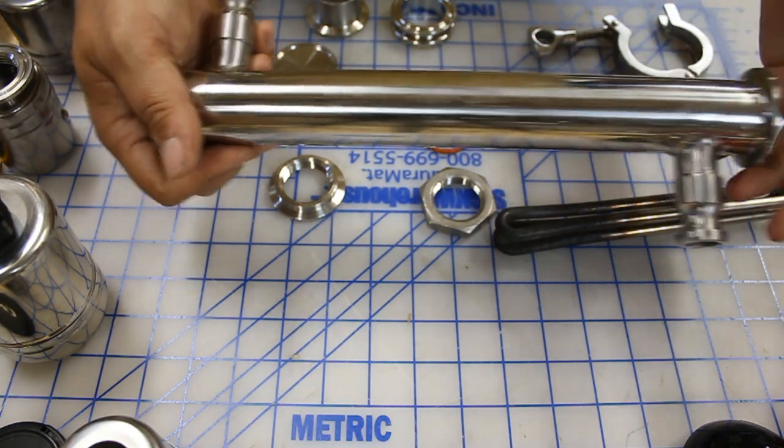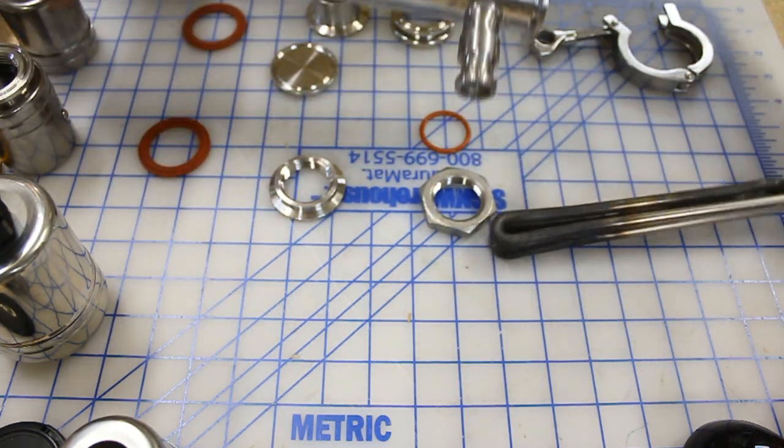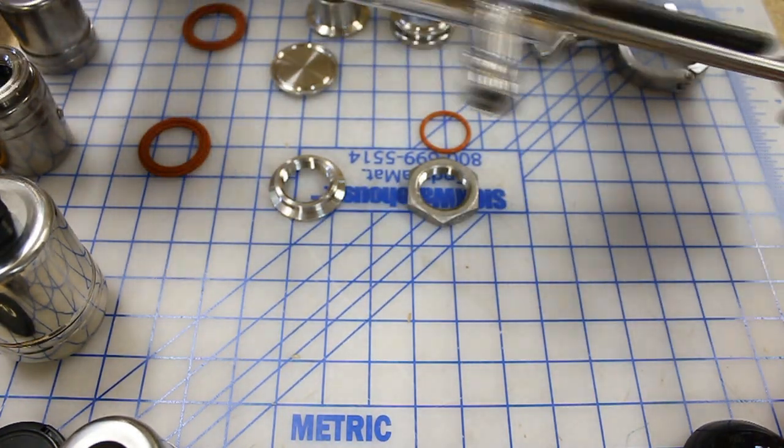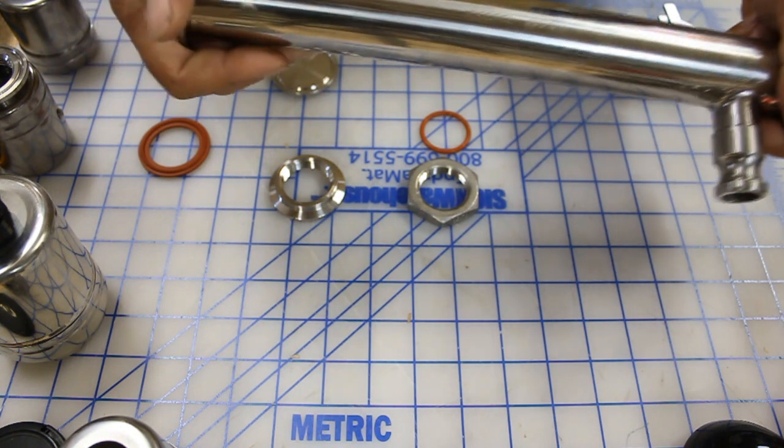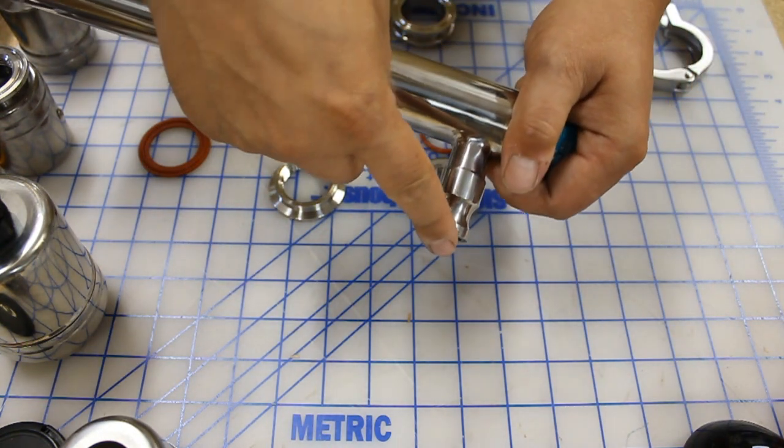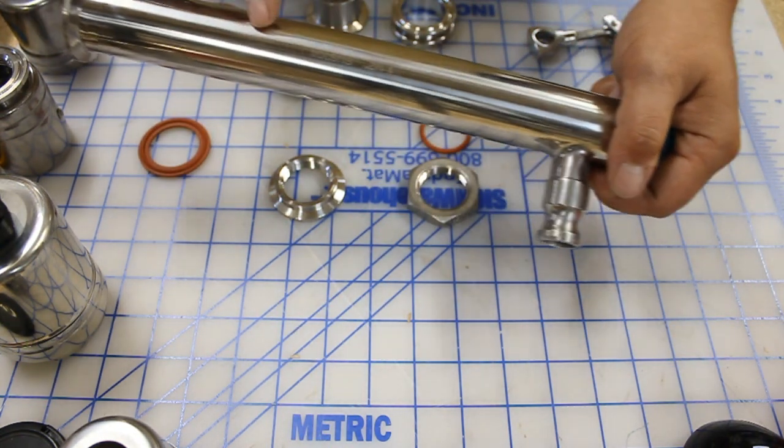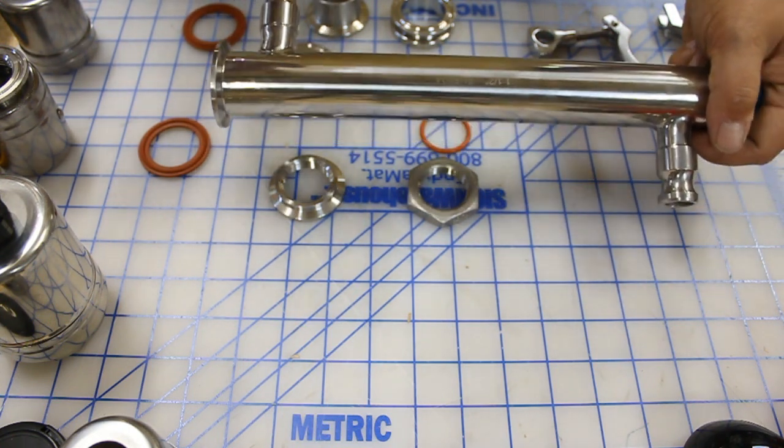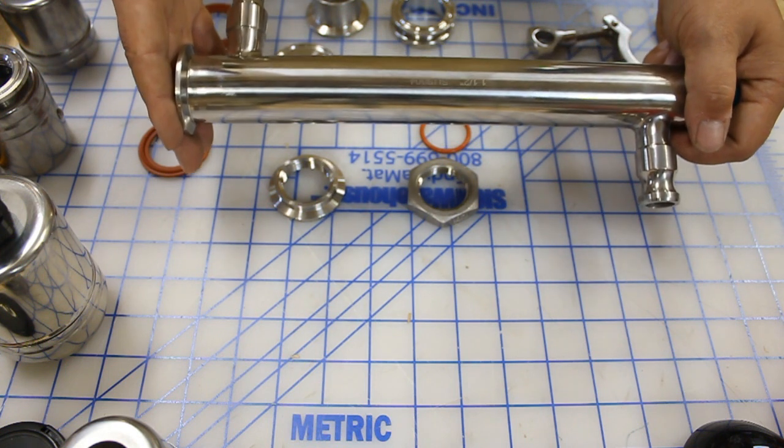The way that this works for people who don't know what RIMS is: a heating element like this one gets installed into the end here, and your wort flows out of your mash tun through here, gets heated by the element, and then flows back out and is sent back to the top of your mash.